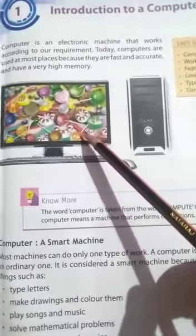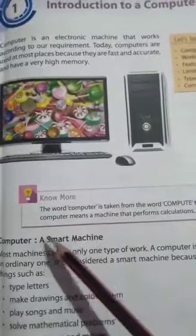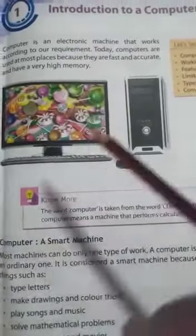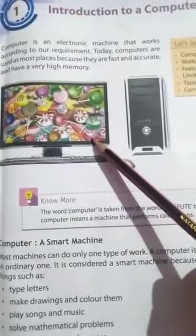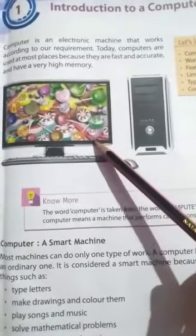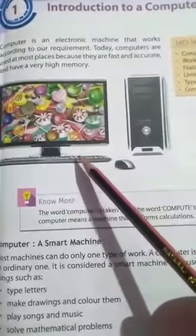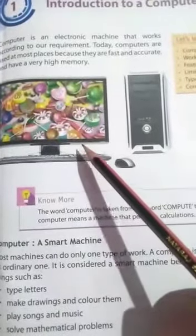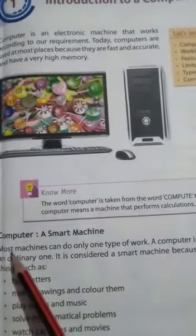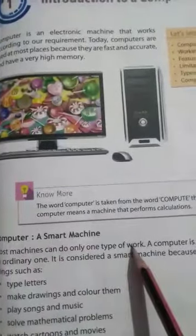Now we move to computer: a smart machine. Why we say that computer is a smart machine? Just think, now I tell you. Because computer can do many tasks at the same time but other machines cannot do. Now we read here most machines can do only one type of work.